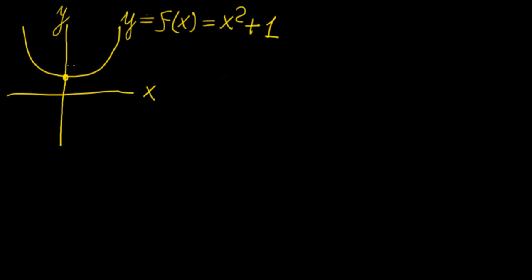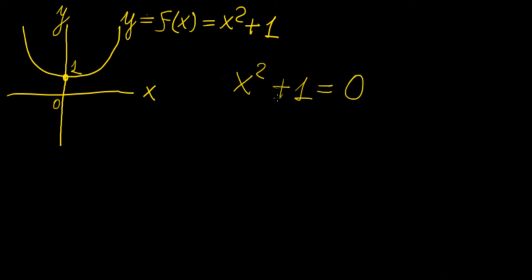But what about this equation? There's a parabola that crosses the y-axis at the point y equals 1, and its vertex is located at the point x equals 0. Our question might be: at what point does it actually cross the x-axis? From the graph you can tell it never actually crosses the x-axis. But what happens when you write this equation and set it equal to 0? Suppose we didn't know how to graph this and we were interested in finding the roots — what would we write?